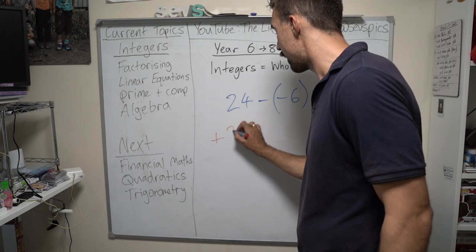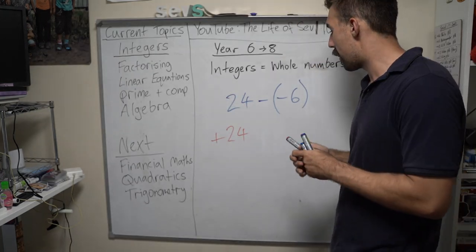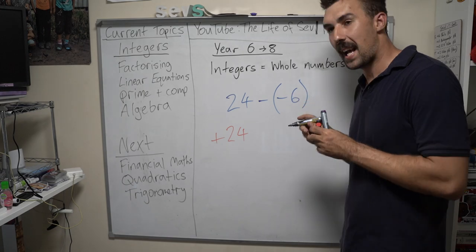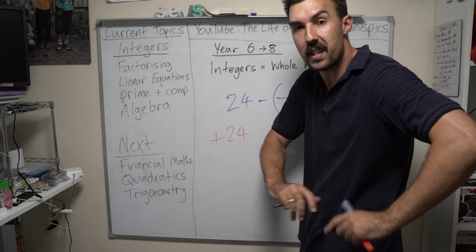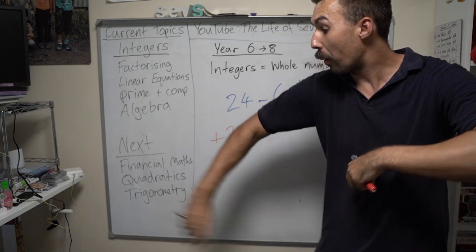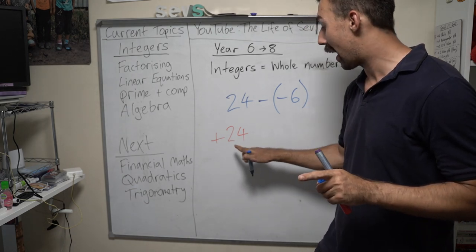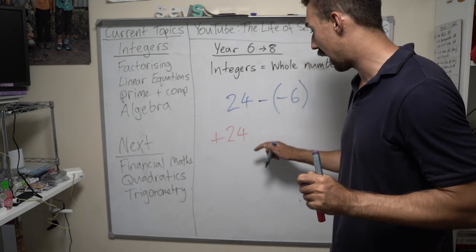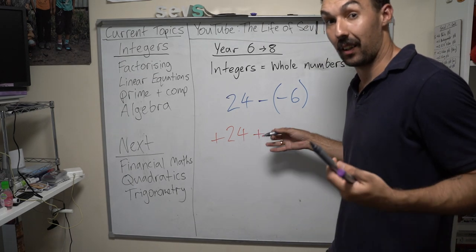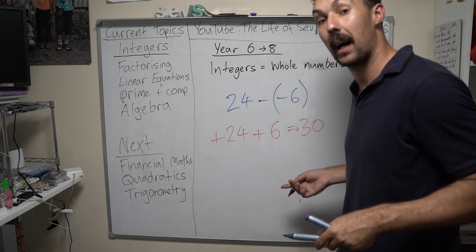So let's have a look. We've got plus 24 — so we're about 24 meters off the ground, hypothetically. And then we take away negative 6. If we're taking away a negative, we're actually getting rid of sandbags — we're throwing the sandbags off the hot air balloon. We don't need them. So if we're taking them away, that means we're adding to the flame emojis. We're going to be even lighter. So, plus 6 equals plus 30.